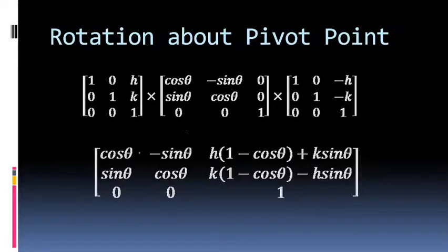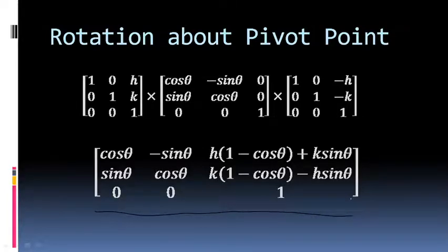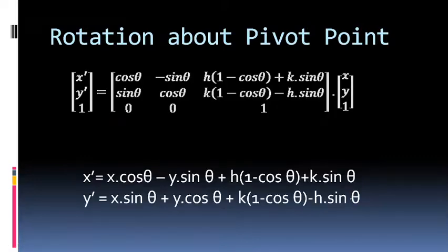The resultant composite matrix is: cosθ  −sinθ  h(1−cosθ)+k sinθ / sinθ  cosθ  k(1−cosθ)−h sinθ / 0  0  1. This matrix is the result of multiplying three basic transformation matrices, so it becomes the composite transformation matrix which effects a rotation about the given pivot point hk.